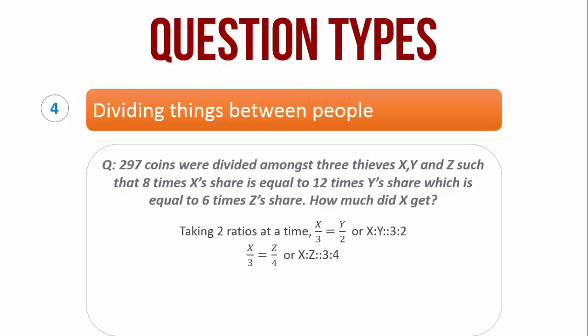Similarly, x by 3 is equal to z by 4 or x is to z is as 3 is to 4. We can safely say that x is to y is to z is as 3 is to 2 is to 4.